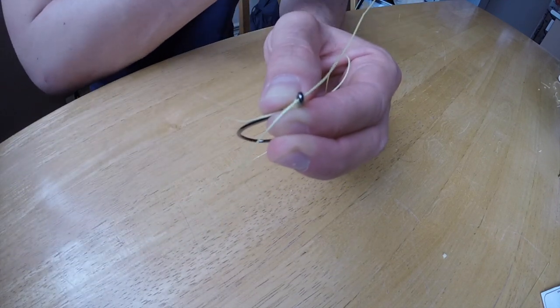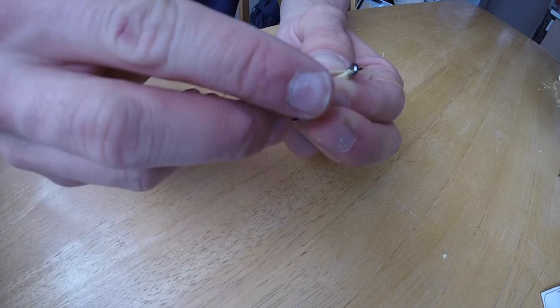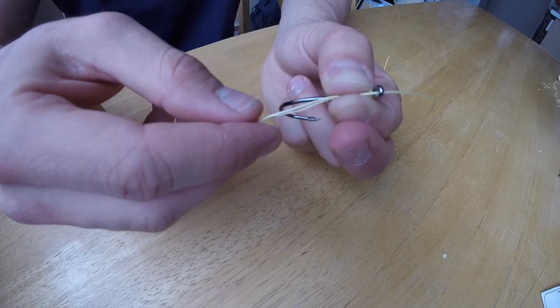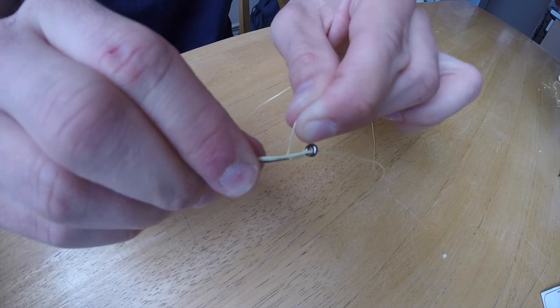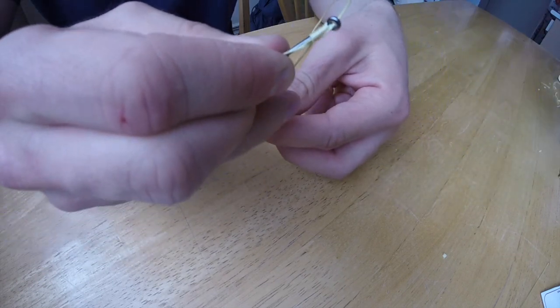You put it back through the eye of the hook, coming from the shank of the hook. So you pull that back through just like that, make yourself a nice little loop. Then you hold that piece with the tag end together and you continue wrapping around that.